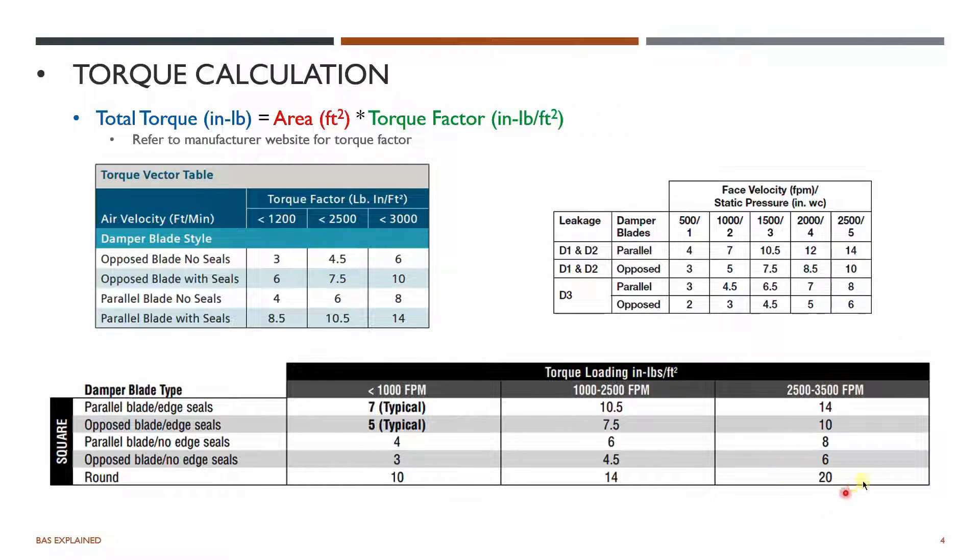This is a different other manufacturer where you can see 1200, 2500, and 3000 feet per minute. The same goes for this one, I think this is a Belimo torque factor table. Based on this torque factor table, from the area which you have found out or calculated you multiply your torque factor to see the actual torque required.